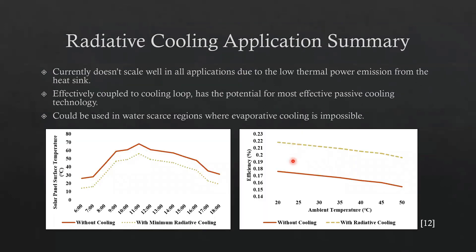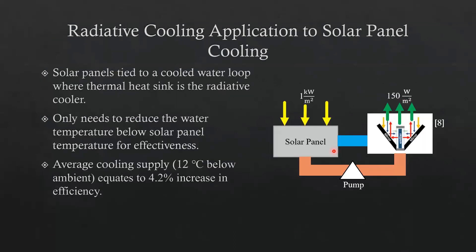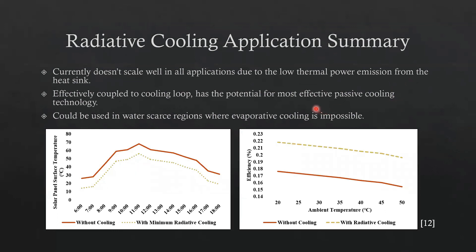Radiative cooling, as we can see from the low cooling power, is not ideal in all applications. But when effectively coupled to a cooling loop, it has the potential to be the most effective passive cooling technology — especially in regions where water is scarce. In those regions, you're not going to want to evaporate water, so you're going to need to conserve as much water as possible. Therefore, radiative cooling could be a viable option in those regions.